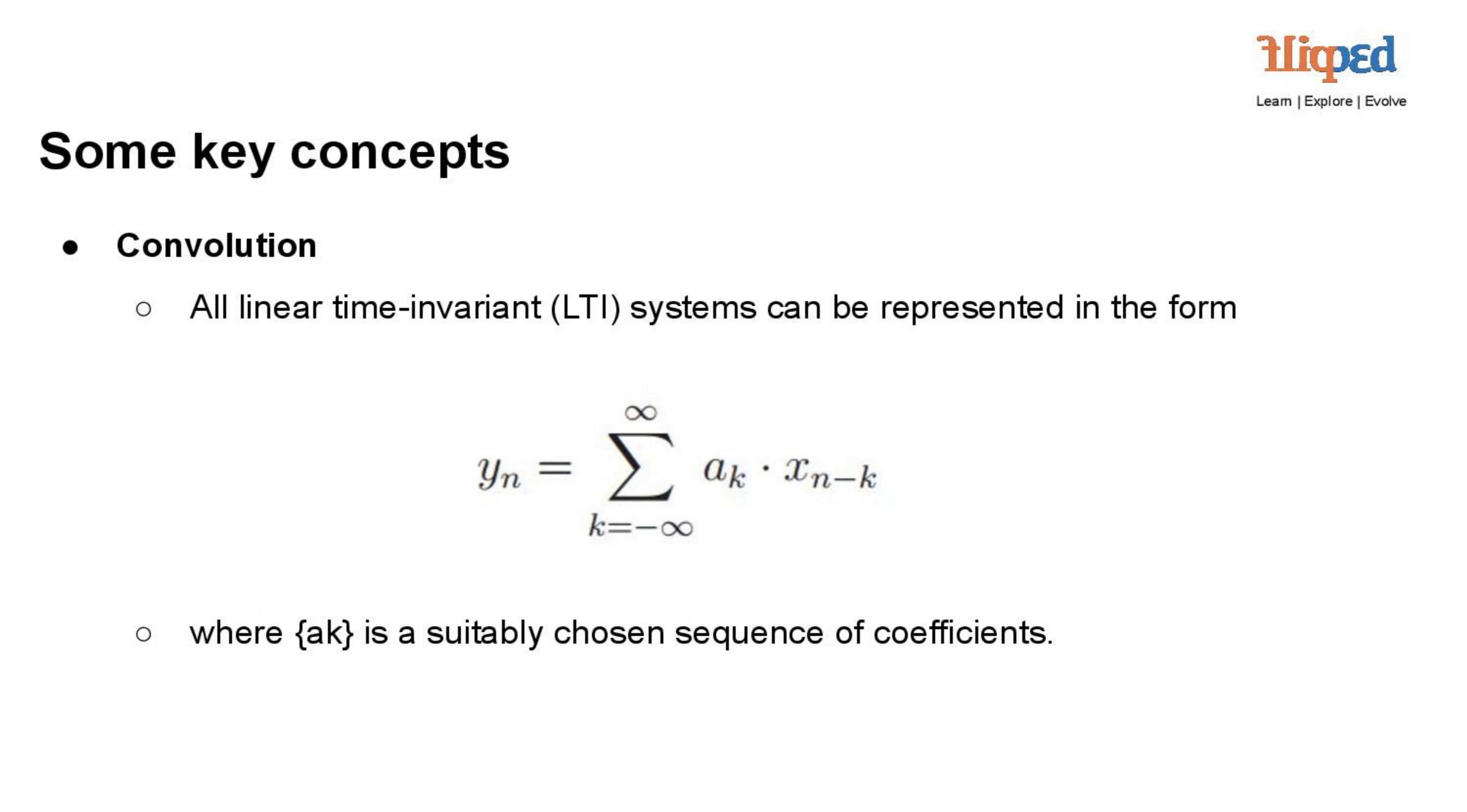All linear time-invariant systems can be represented in the form of a convolution sum or integral. This representation describes the output of the LTI system as a result of convolving the input signal with the system's impulse response. For discrete-time LTI systems, the representation takes the form of a convolution sum.